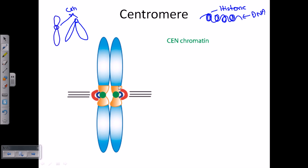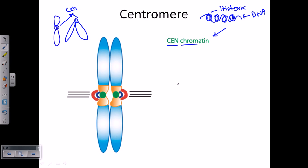In the chromosome we have chromatin. Chromatin means DNA plus proteins — that is, histones and DNA compiled together are termed as chromatin. The chromatin that is present in the centromere is termed as CEN chromatin, where CEN in capital denotes the centromere. So the CEN chromatin here is these green regions.